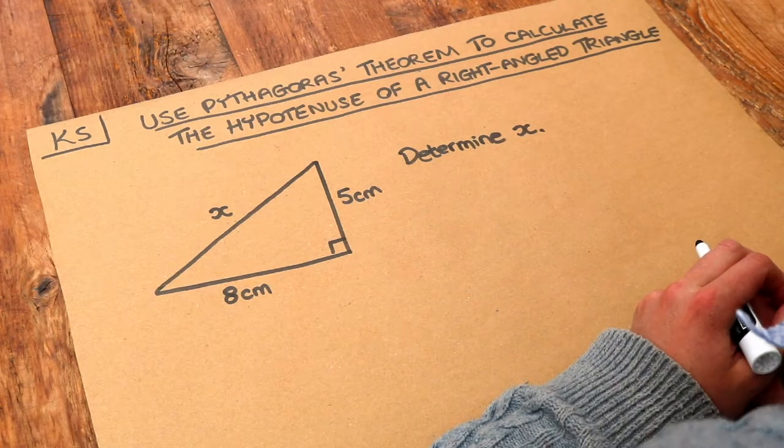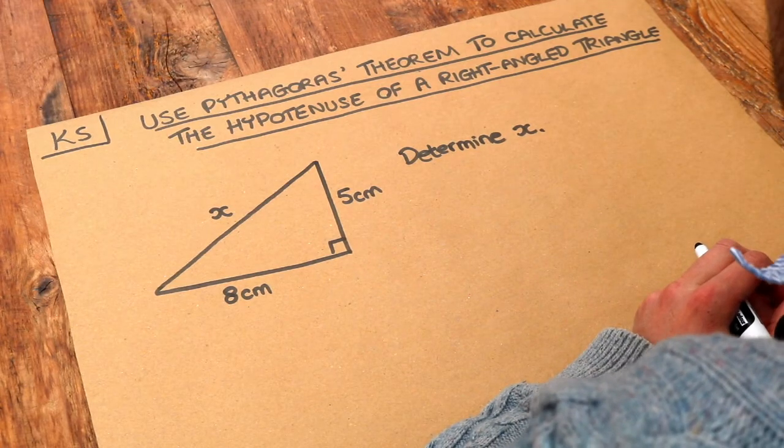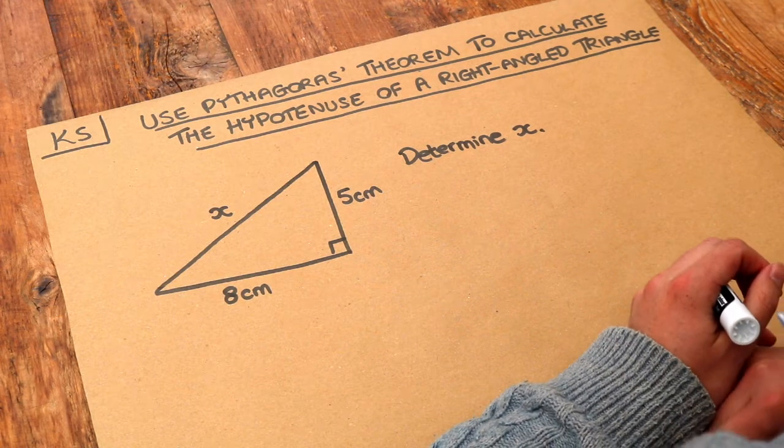Hello and welcome to this Dr Ross Mass's key skill video on using Pythagoras theorem to calculate the hypotenuse of a right angle triangle.